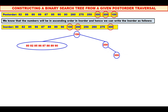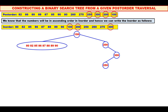In the inorder, all three elements are to the left of 300. Therefore, take all three elements to the left sub-tree of 300. Now, among 250, 260, 275, which is the root? See the post-order — it is 250. So 250 is the root. Mark it in the inorder. Both the elements 260 and 275 are to the right of 250. Therefore, take both of them to the right sub-tree of 250.